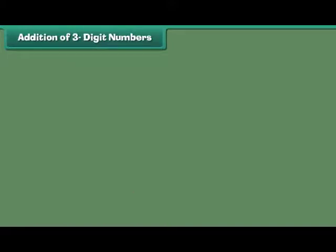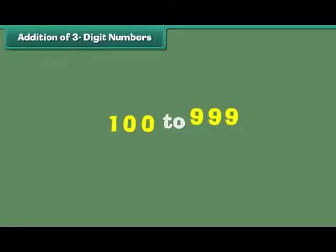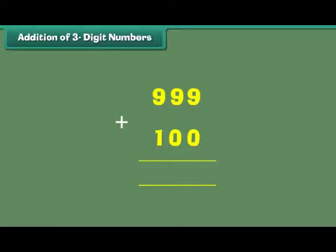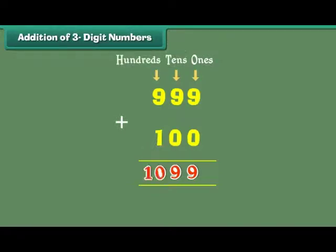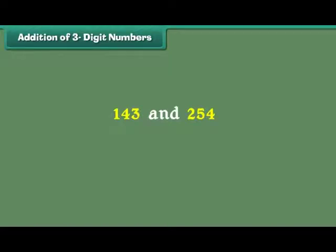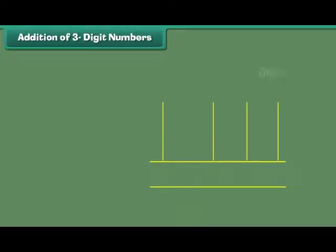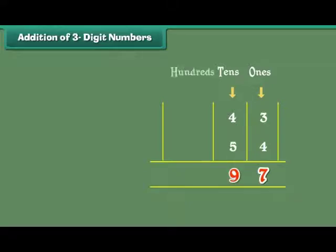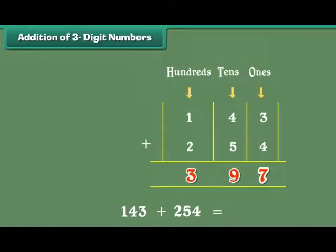Addition of 3 digit numbers. The numbers from 100 to 999 are called 3 digit numbers. In order to add two 3-digit numbers, we first add the digits at the 1s place, then the digits at the 10s place, and finally the digits at the 100s place. Let us add 143 and 254. The digits at the 1s place are 3 and 4: 3 plus 4 is equal to 7. The digits at the 10s place are 4 and 5: 4 plus 5 is equal to 9. The digits at the 100s place are 1 and 2: 1 plus 2 is equal to 3. Therefore, 143 plus 254 is equal to 397.